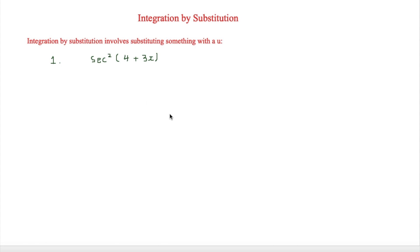This question asks to integrate sec squared in brackets 4 plus 3x. We have to decide what is going to be our u. Because it's in brackets, if anything is in brackets we'll normally say that is our u. So therefore u is equal to 4 plus 3x.